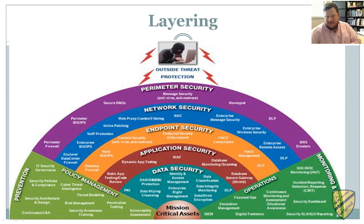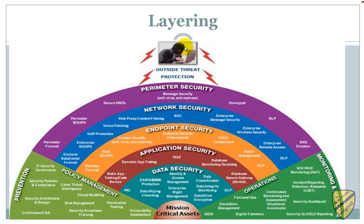Our first defense is layering. Information security must be created in layers. One defense mechanism may be relatively easy for an attacker to circumvent. Instead, a security system must have layers, making it unlikely that an attacker has the tools and skills to break through all of them. In our graphic, you can see an outside threat at the top, with our information assets way down at the bottom — the things we need to keep up, running, and protected. Between them, we have several different layers.